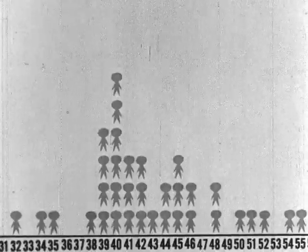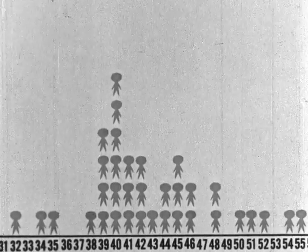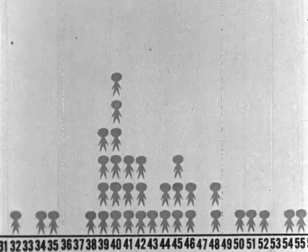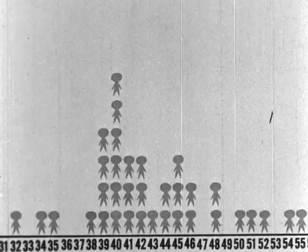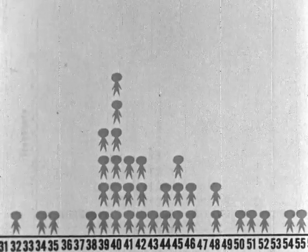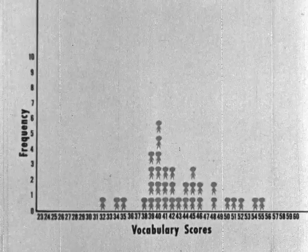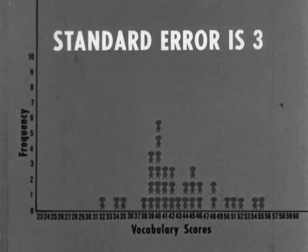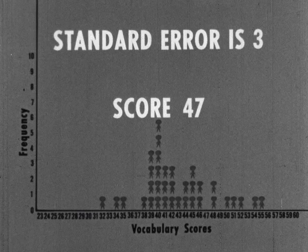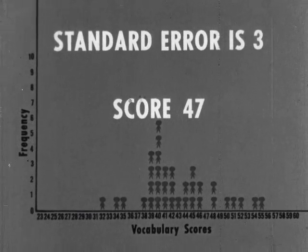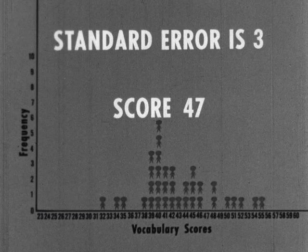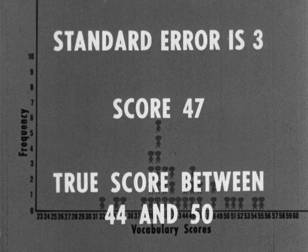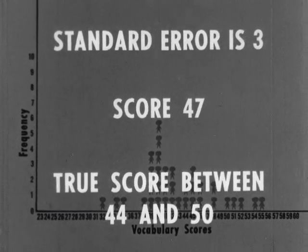Each of these individual scores really represents a possible range of scores, since it is not possible to eliminate all sources of error in the test and in the testing procedure. The standard error for this test is stated in the manual to be three. With a score of 47 and a standard error of three, we would be correct two-thirds of the time in saying that the student's true score falls between 44 and 50.